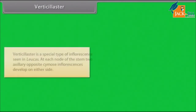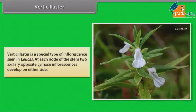Verticillaster is a special type of inflorescence seen in leucas. At each node of the stem, two axillary opposite cymose inflorescences develop on either side.